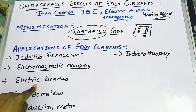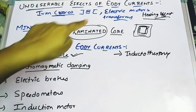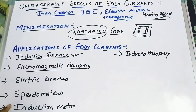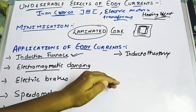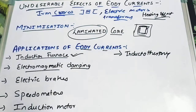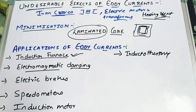Electric brakes in trains also use eddy currents — when we apply the brake, eddy current helps stop the train. Other applications include the speedometer, induction motors, and inductothermy. Inductothermy is a branch related to localizing heat in tissues of the human body. These are all the topics related to eddy currents — its effects, experiments, and applications.